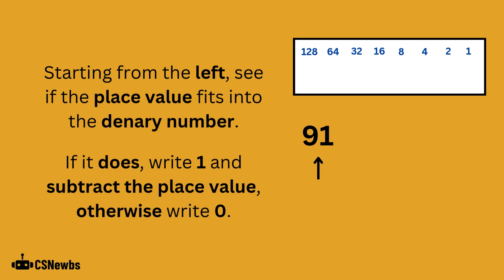This example will convert 91 into binary. Starting from the left, you will see if the place value fits into the denary number. If it does, we'll write a 1 and subtract the place value. Otherwise, we will write 0.